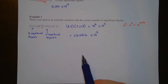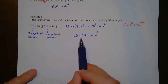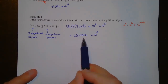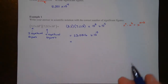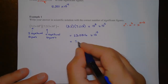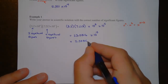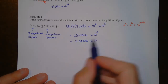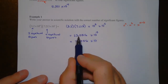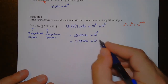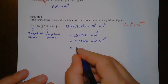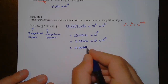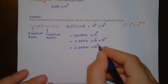Now we need to write this in proper scientific notation — 23.0816 is not between 1 and 10. Since it's bigger than 10, we move the decimal one place to the left, giving 2.30816 times 10 to the 1st, times 10 to the 13th. Using the exponent addition rule again, this becomes 2.30816 times 10 to the 14th.